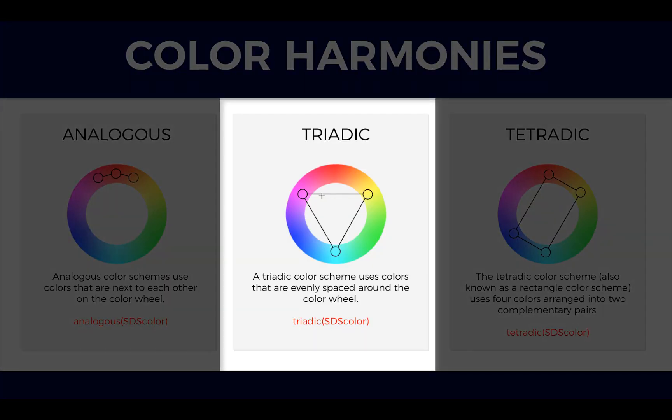Triadic scheme. A triadic color scheme uses colors that are evenly spaced around the color wheel. Triadic color schemes tend to be quite vibrant, even if you use pale or unsaturated versions of your hues. To use a triadic harmony successfully, the colors should be carefully balanced — let one color dominate and use the two others for accent.